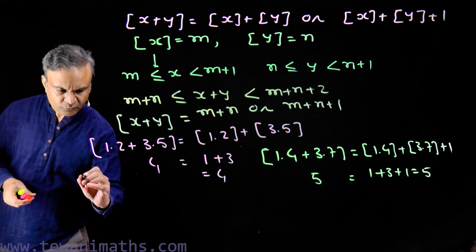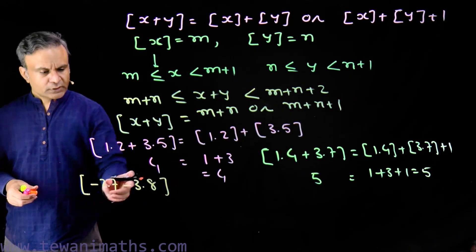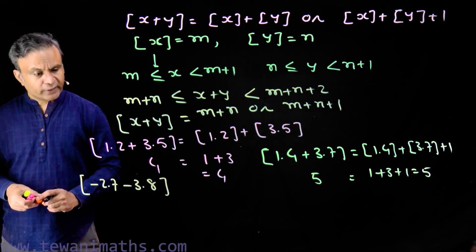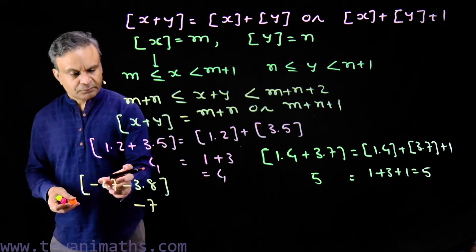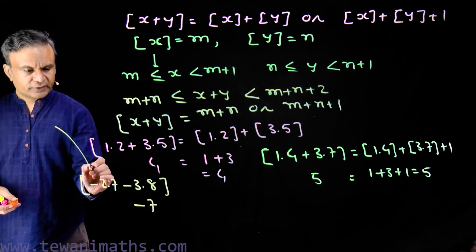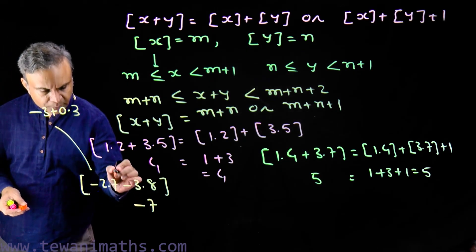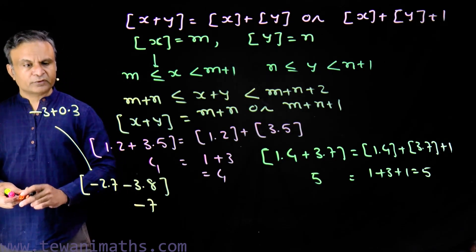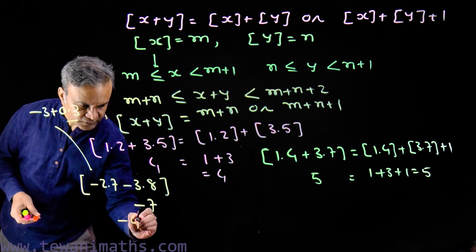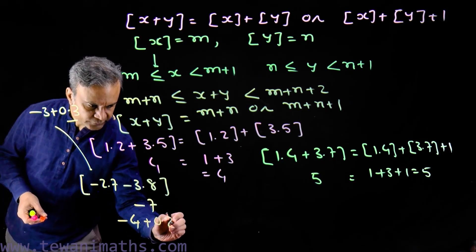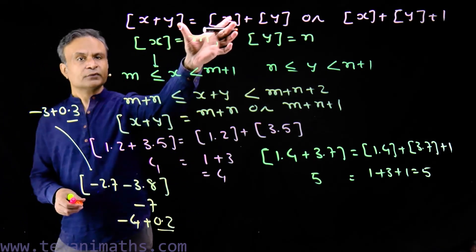Now consider the greatest integer of minus 2.7 plus minus 3.8. This sum is minus 6.5, so its greatest integer will be minus 7. What will be the fractional parts? Minus 2.7 is minus 3 plus 0.3, so the fractional part of minus 2.7 is 0.3. And minus 3.8 is minus 4 plus 0.2, so the fractional part is 0.2. The sum of these two fractional parts is 0.5, which is less than 1, so we use this comparison.